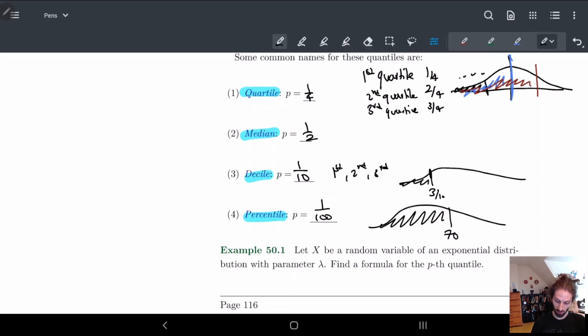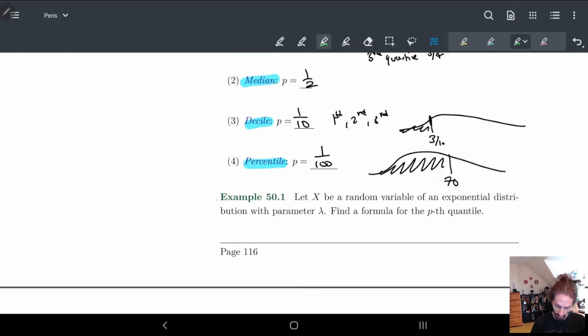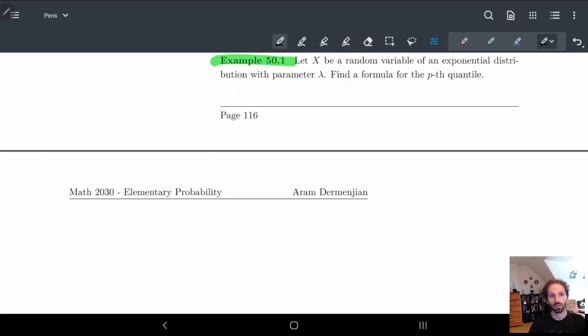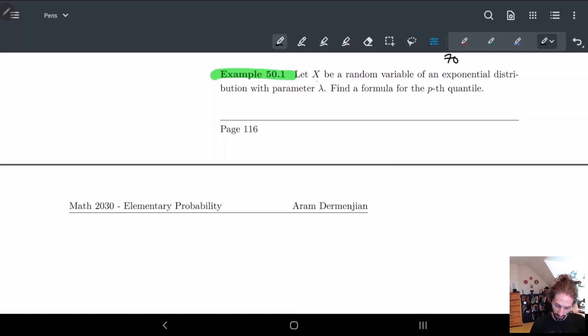So that's basically where this idea of quantile is coming from. Let's look at an example as to how this kind of helps us figure out scores and stuff. If I have some random variable X and it is exponential distribution with parameter λ, what I want to do is find a formula for the pth quantile. We know from before that this distribution is equal to 1 - e^(-λx). We already saw this previously.